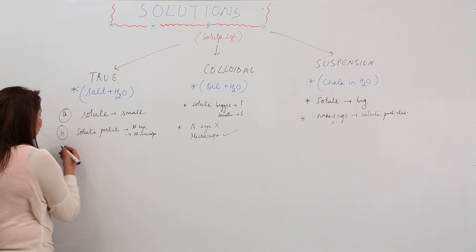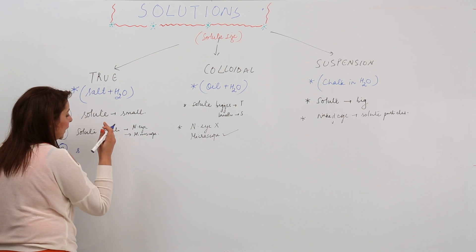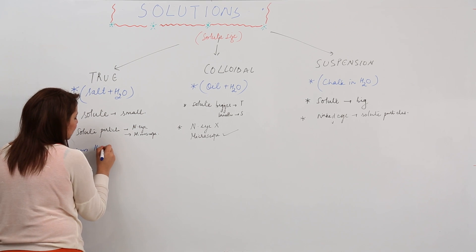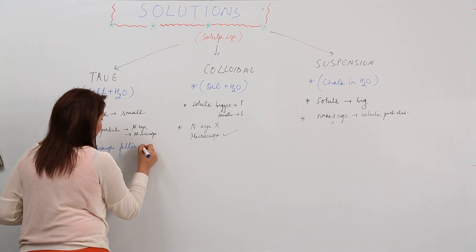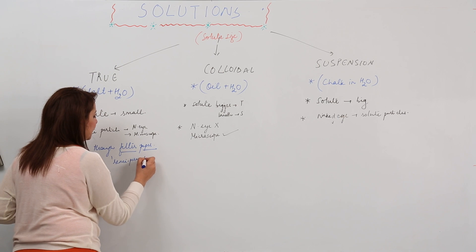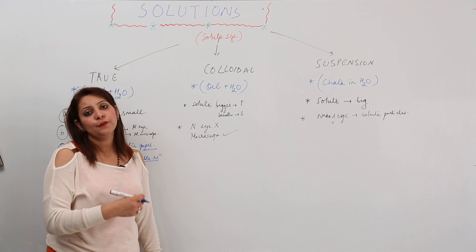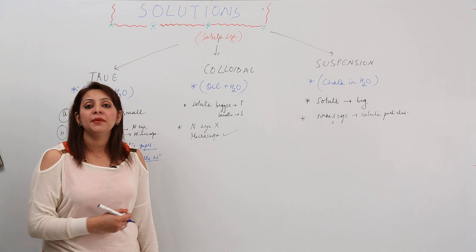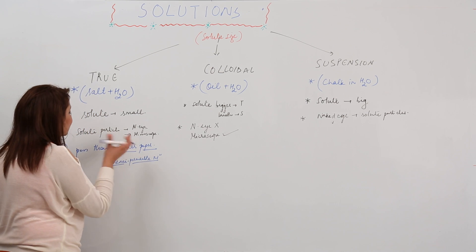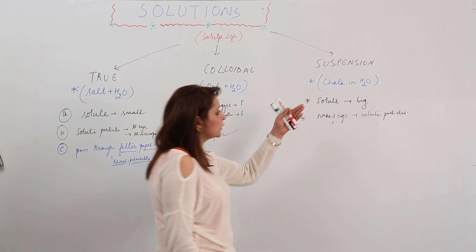The third property is filtration. When we pass a true solution through a filter paper, the solute particles do not get separated — they pass through the filter paper. If instead of a filter paper we use a semi-permeable membrane — which allows selected substances to pass through and stops certain others — in the case of true solution, both solute and solvent pass through it and do not get separated.